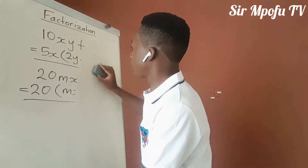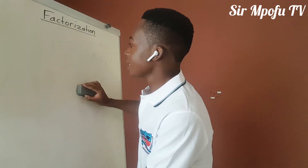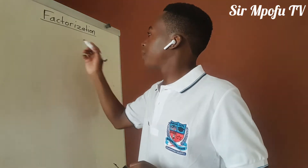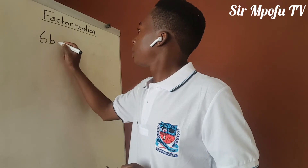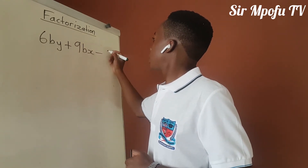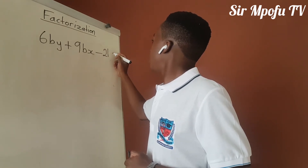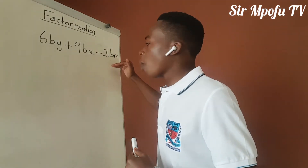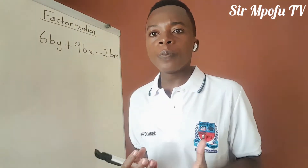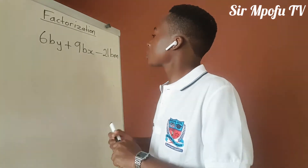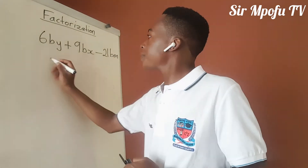Let us do one last example. Someone maybe is asking: what if you have got 3 terms? Yes, it's possible even when you have 3 terms to factorize. Let's say you have 6by plus 9bx minus 21bm. Is it possible to factorize this? Yes, it is, because we have got common factors. You won't be asked to factorize something that you couldn't factorize. So here our highest common factor on all 3 terms is 3b.